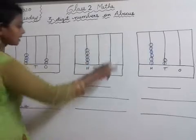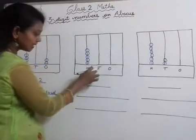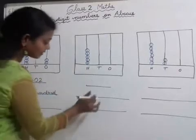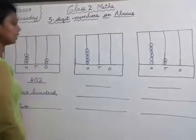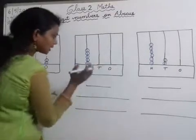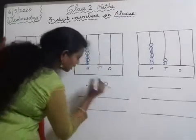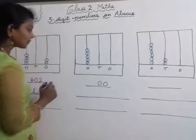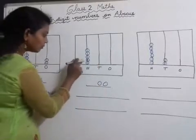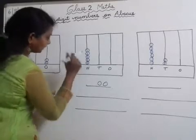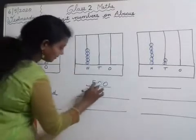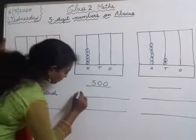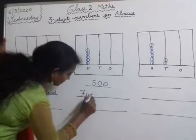Next, see this Abacus. In the 1s place, there are no balls. In the 10s place also, there are no balls. In the 100s place, they have given some balls. So we have to write the number and the number name. 1s place — write 0. 10s place — write 0. In the 100s place, how many balls are there? 5 balls are there. So the total is 500. We have to write the number name for this — five hundred.